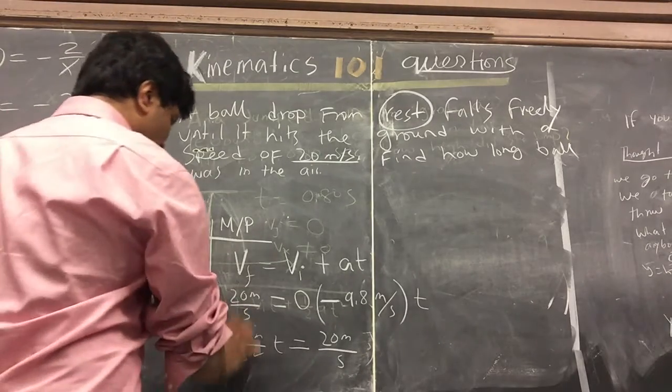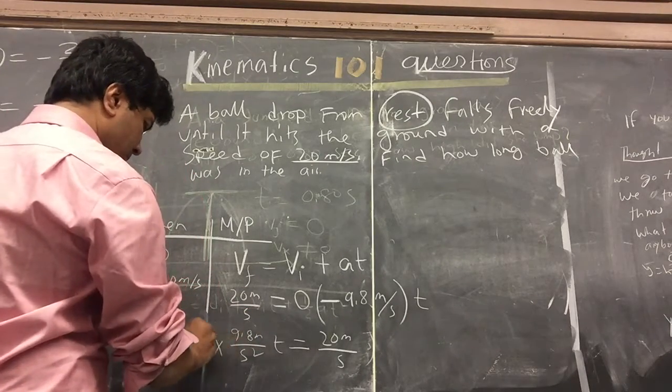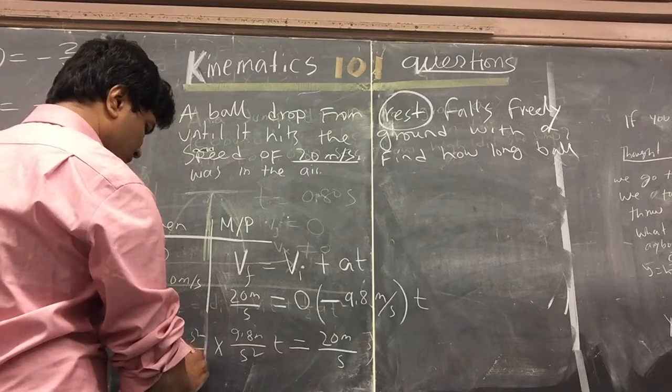Now we're going to divide both sides by 9.8 meters per second squared.